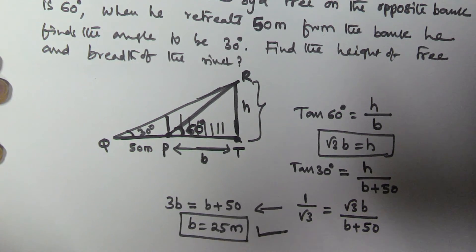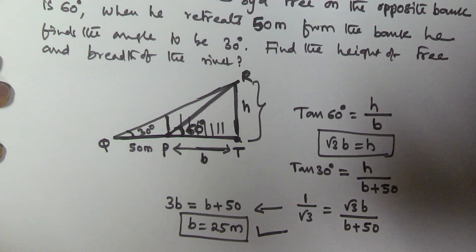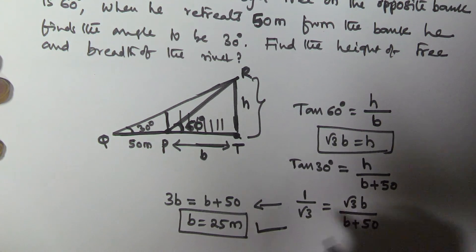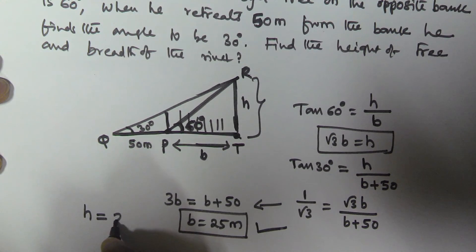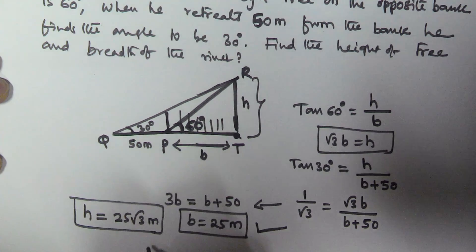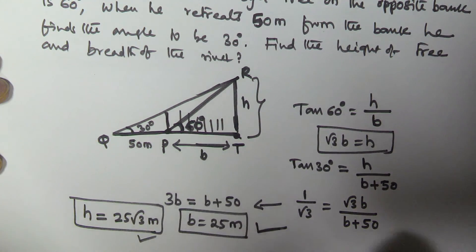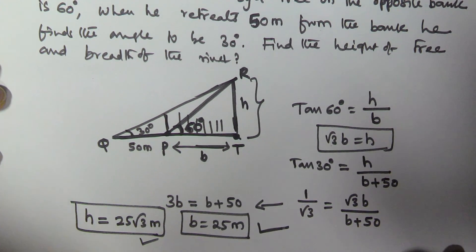From h = √3 × b, the height of the tree equals 25√3 meters. So the height of the tree is 25√3 meters and the breadth of the river is 25 meters. I hope you got this — thank you very much for watching this video, and please subscribe to my channel.